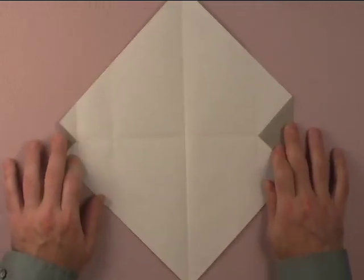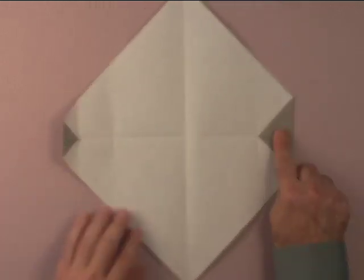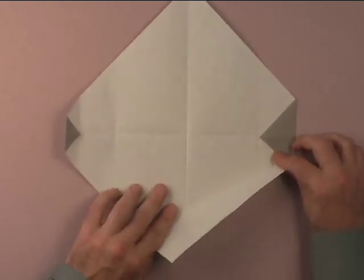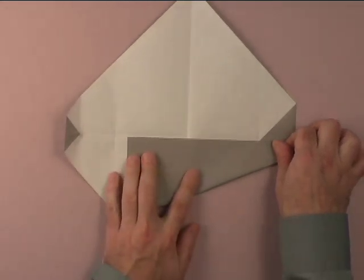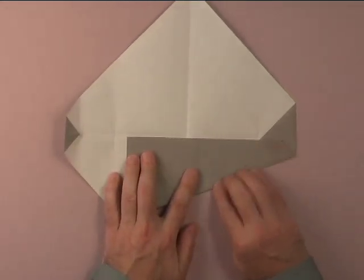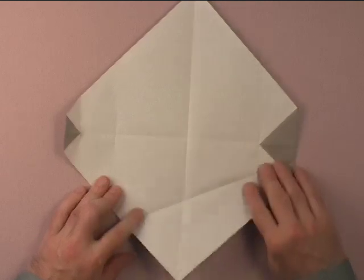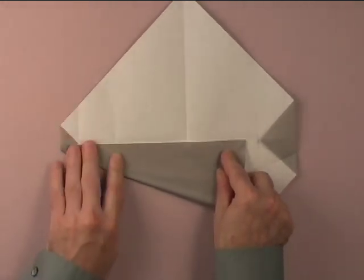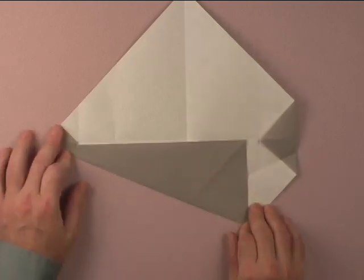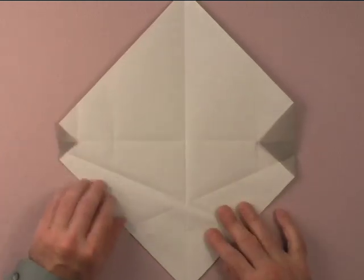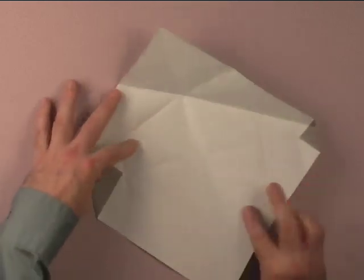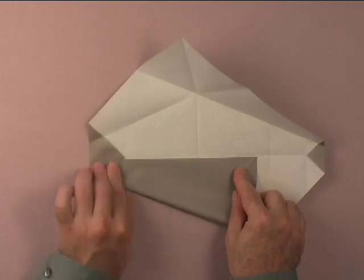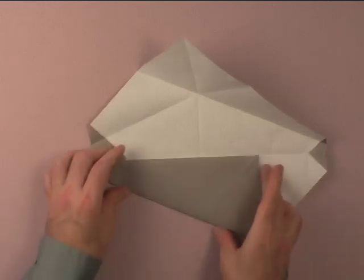Rotate the paper so that the large triangle is on your right. Take the bottom right edge and fold it to the crease. Unfold. Fold the bottom left edge to the crease and unfold. Let's do the same thing on the opposite side. Bottom left edge to the crease. Unfold.